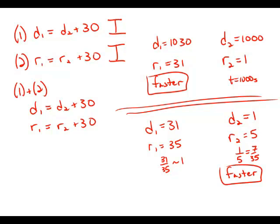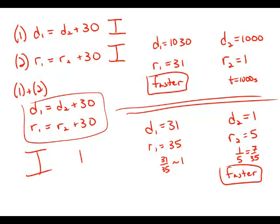Because we can construct scenarios consistent with the numbers that make either the first object faster or the second object faster, it means that these conditions combined are still insufficient to answer the question. And so the answer is E.